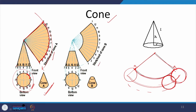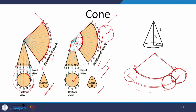For a frustum — a cut cone — the process is the same. We draw the full cone development and then remove the apex portion corresponding to the slant length cut off. The bottom circle is drawn where the base meets the development, and the top circle is drawn at the cut location along the slant. This is how we develop the surface for the frustum of a cone.